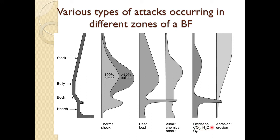Regarding oxidation: most oxidation occurs at the tuyere level — C + O₂ → CO₂, which is an exothermic reaction releasing a large amount of heat. With more coke present, reducing gases form and a predominantly reducing atmosphere prevails upward. Oxidizing atmosphere mainly prevails in front of the tuyere. In the lower region there is also the reaction FeO + CO → Fe + CO₂, giving a slightly oxidizing atmosphere locally.